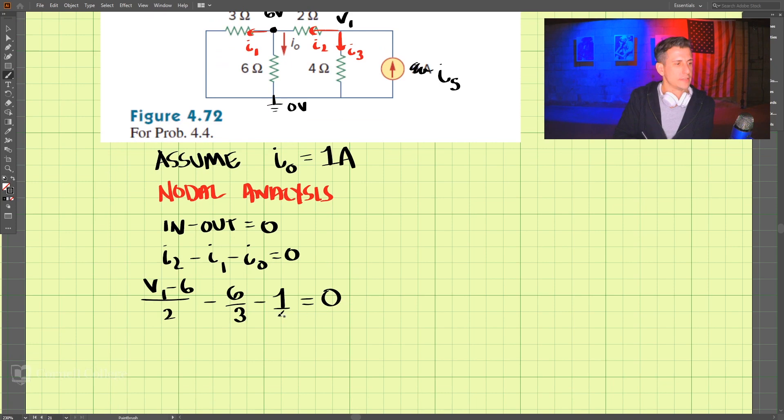Now to solve this, let's take this and multiply it by 6, that's going to make it easier to solve. So we have 3v1 minus 6... 6 times 6 is 36, minus 12, minus 6.